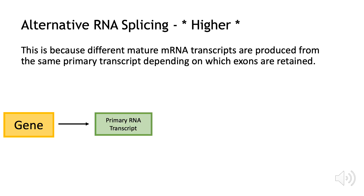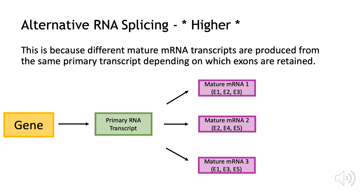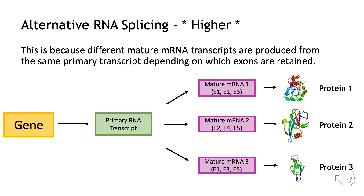Our gene is converted into the primary RNA transcript. This can then create mature mRNA 1, which has exons 1, 2 and 3, and creates protein 1. Mature mRNA 2 has exons 2, 4 and 5, and this creates a different protein, protein 2. And finally, mature mRNA 3 has exons 1, 3 and 5, and this creates protein 3. This shows how alternative RNA splicing can take a small section of the genome and create a large variety of proteins in the proteome.